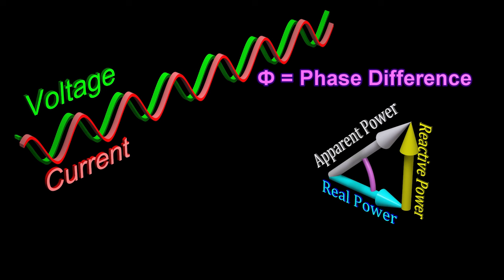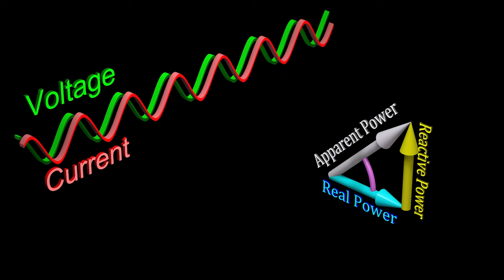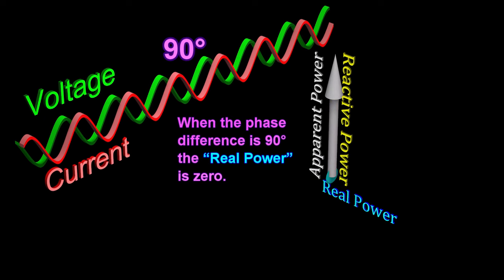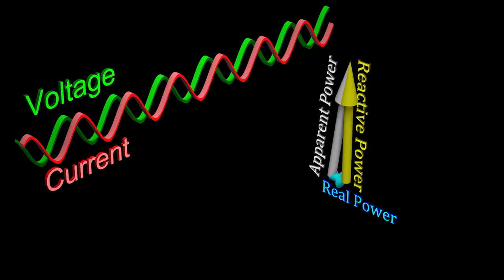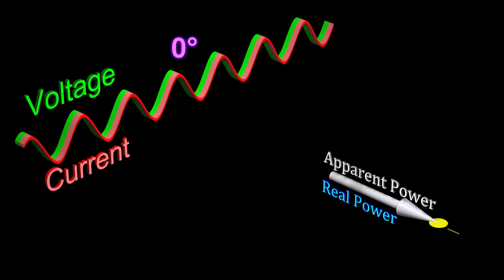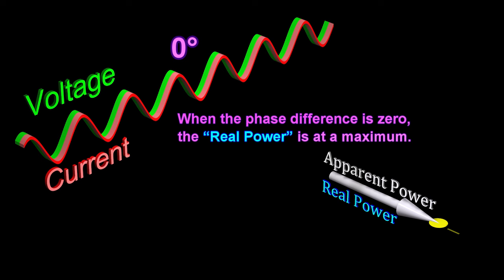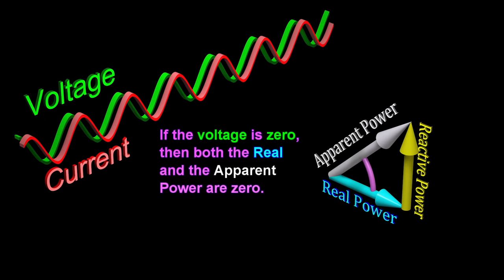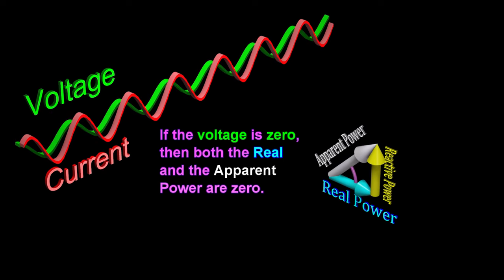The phase difference between the voltage and the current is equal to the angle of this triangle. When the phase difference is 90 degrees, the real power is zero. When the phase difference is zero, the real power is at a maximum. If the voltage is zero, then both the real and the apparent power are zero.